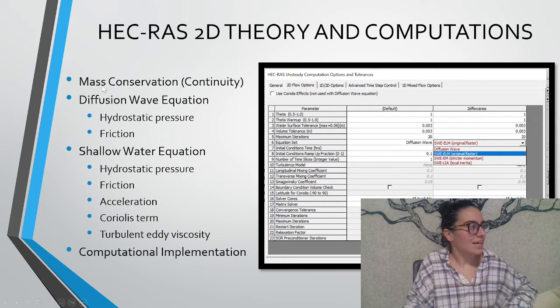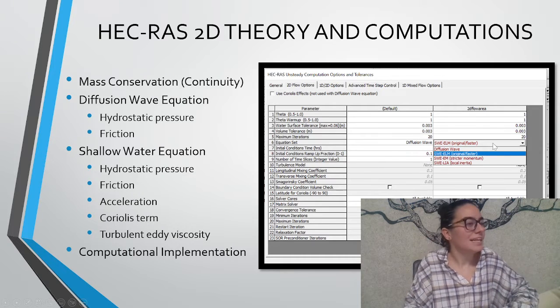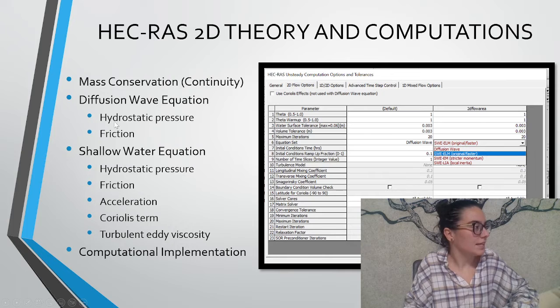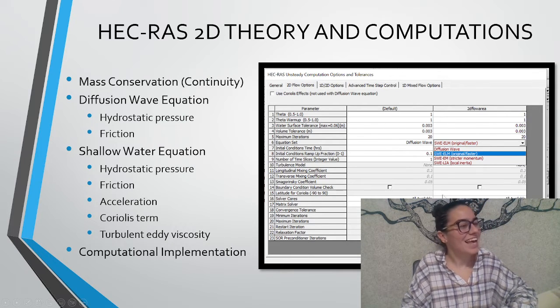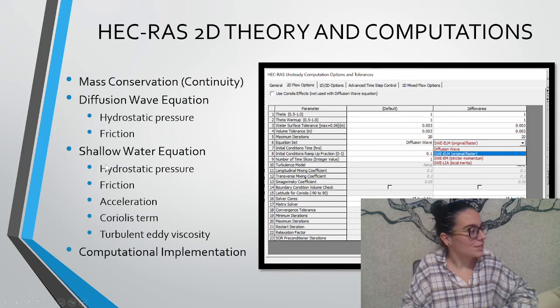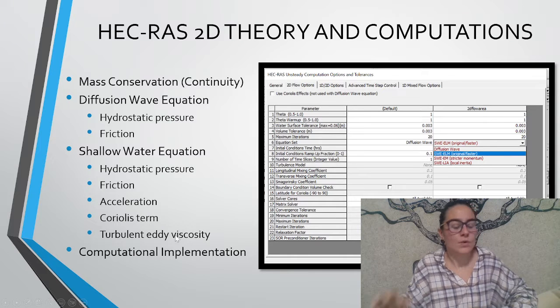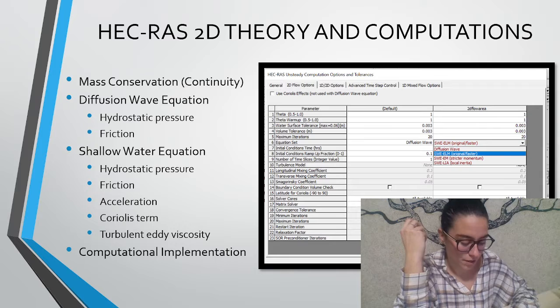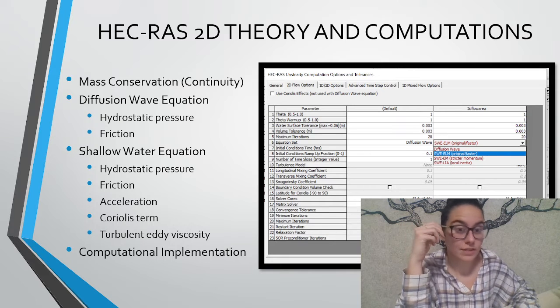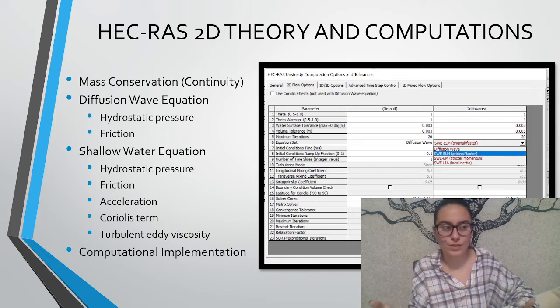All these equations have mass conservation continuity. The first one, the diffusion wave, has the hydrostatic pressure and the friction. The other three, the shallow water equation, also have acceleration, Coriolis term, turbulence and viscosity. We also have other computational implementations for example for a bridge or for the dam break that HEC-RAS uses also other equations.